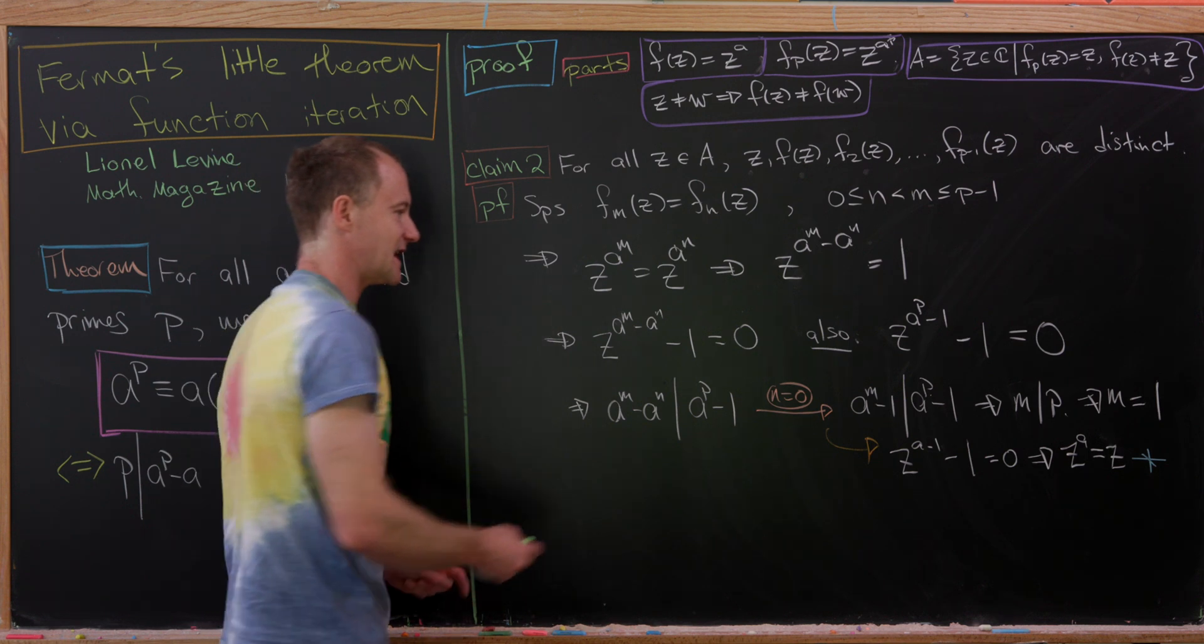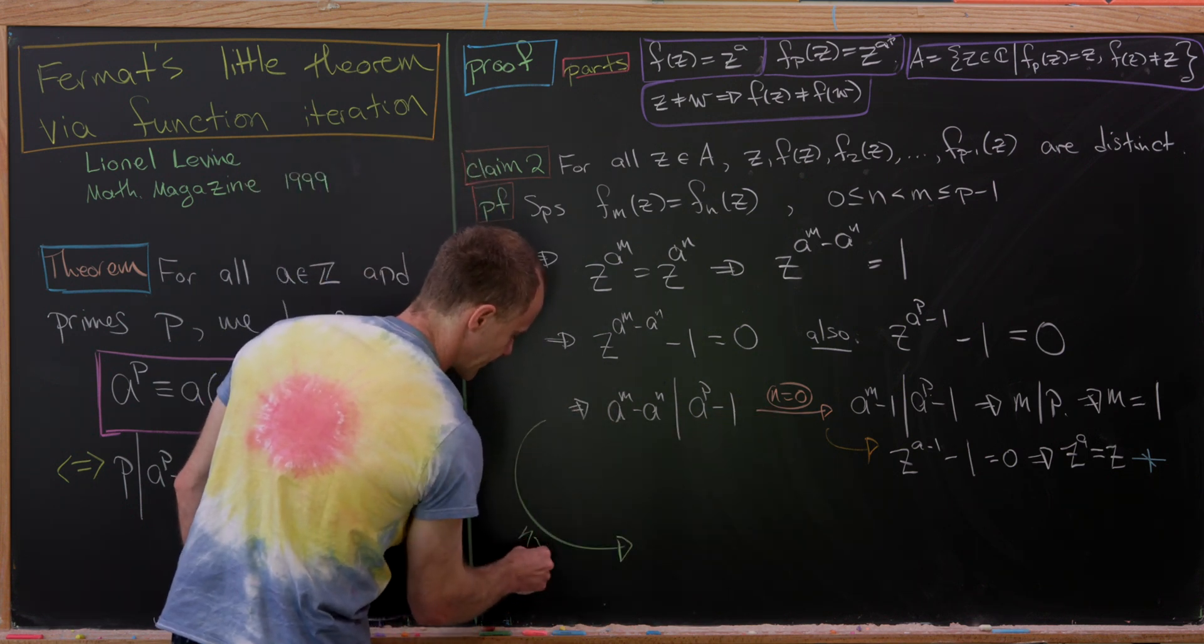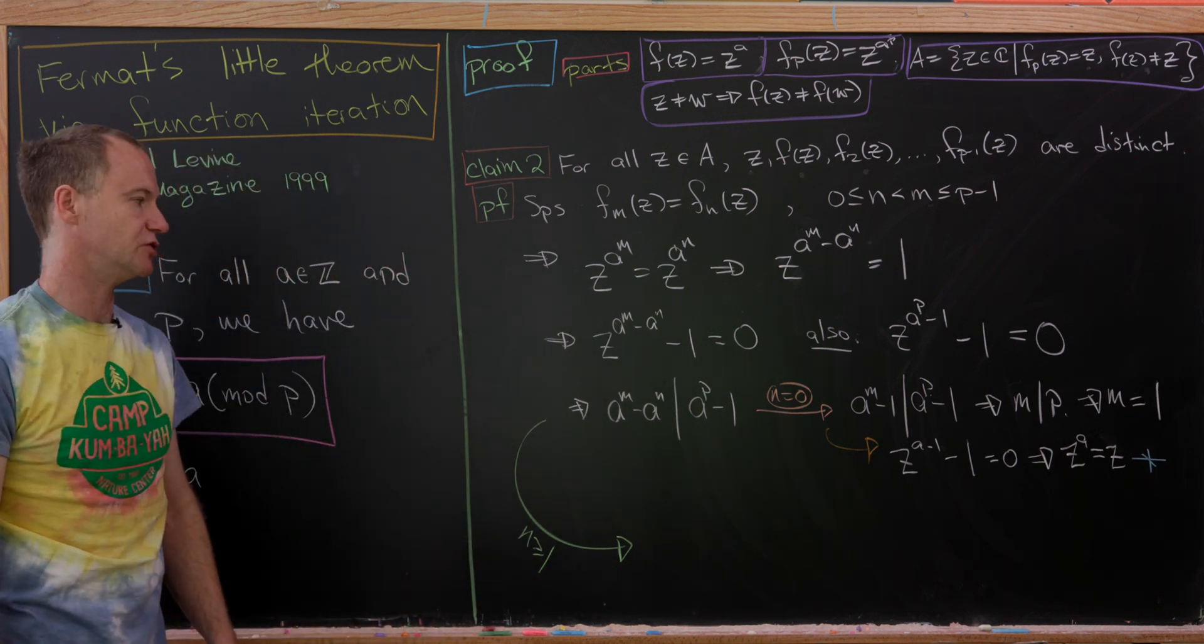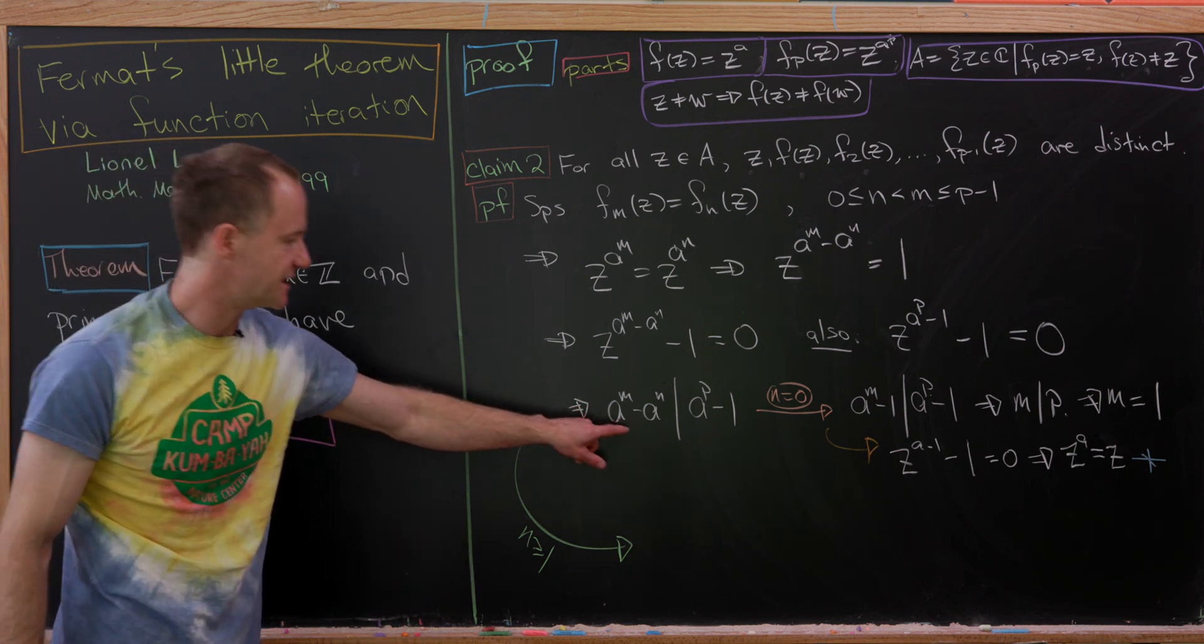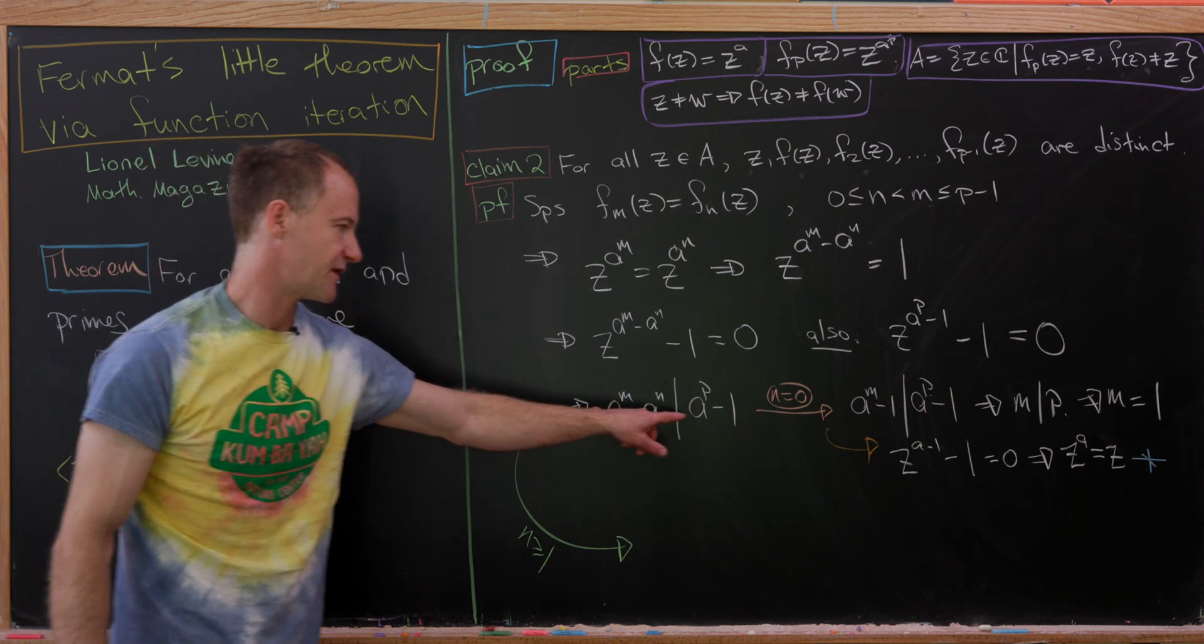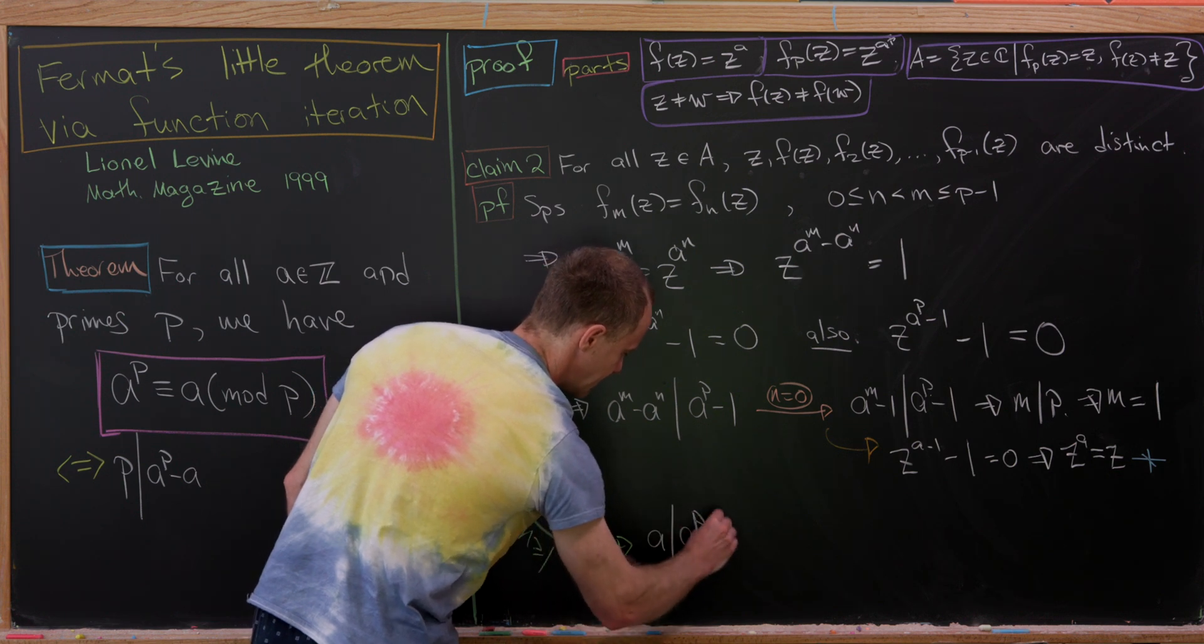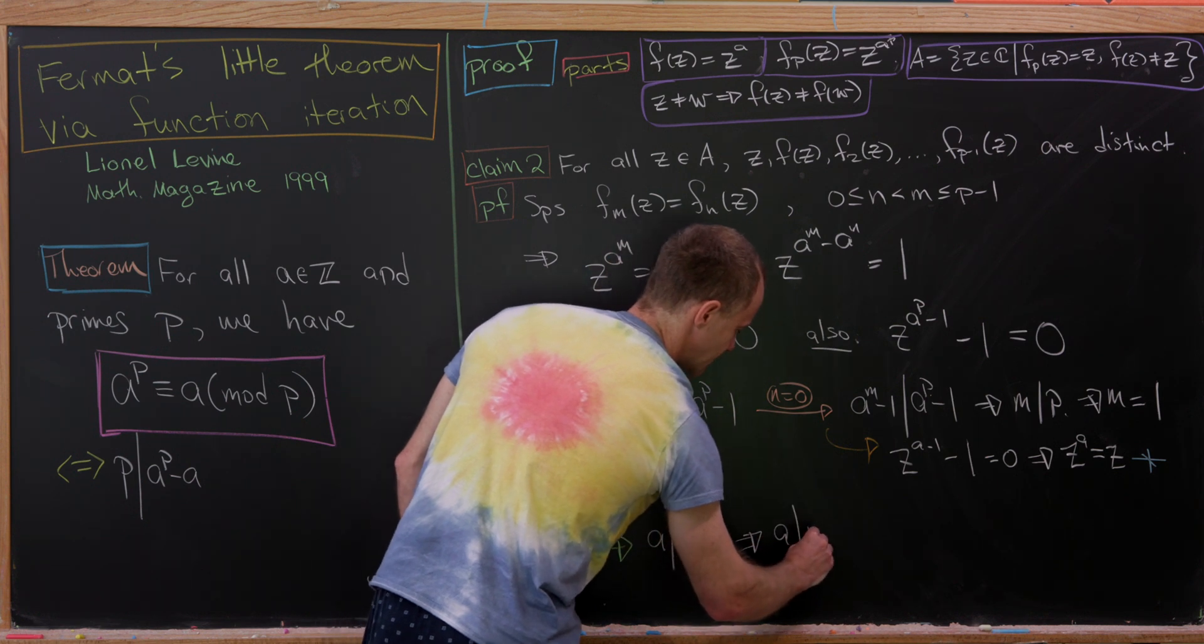After moving some things around, but Z to the A is F of Z. So that means that F of Z equals Z. That means we're in this situation right here, which is a contradiction. Okay, good. So what does that mean? That means that N has to be bigger than or equal to 1. That's the only other case. So like I said, N is bigger than or equal to 1. Oh, but if N is bigger than or equal to 1, this left-hand part of the divisibility is a multiple of A.